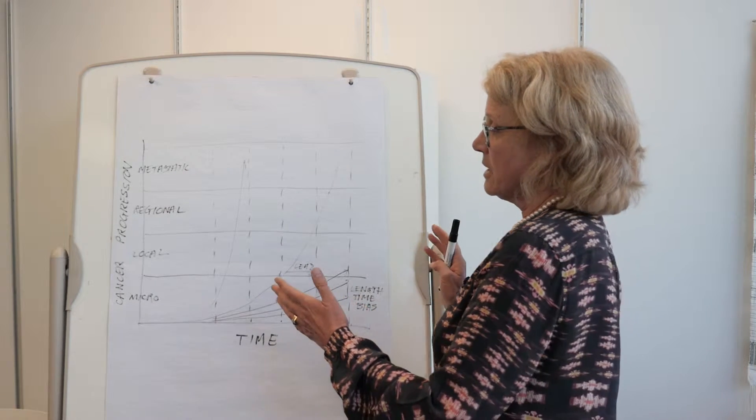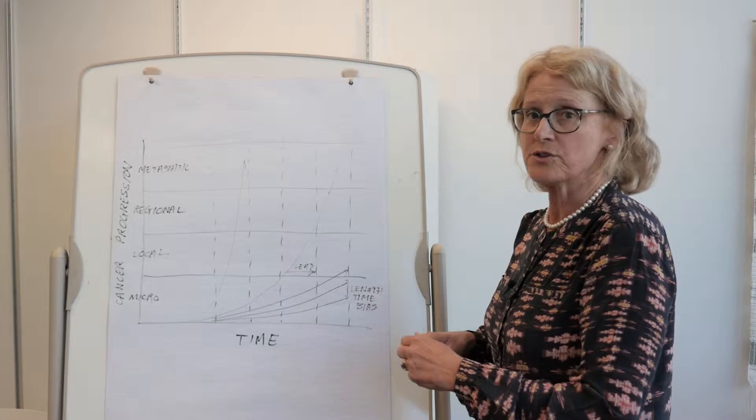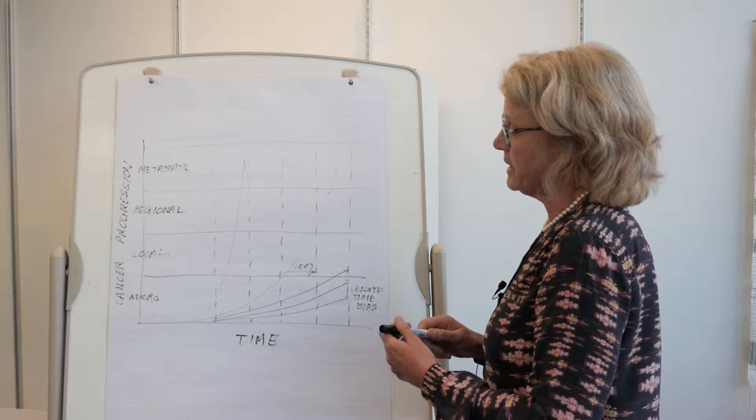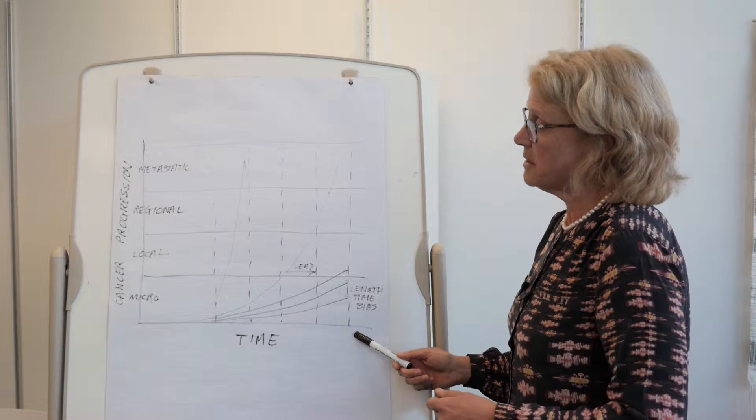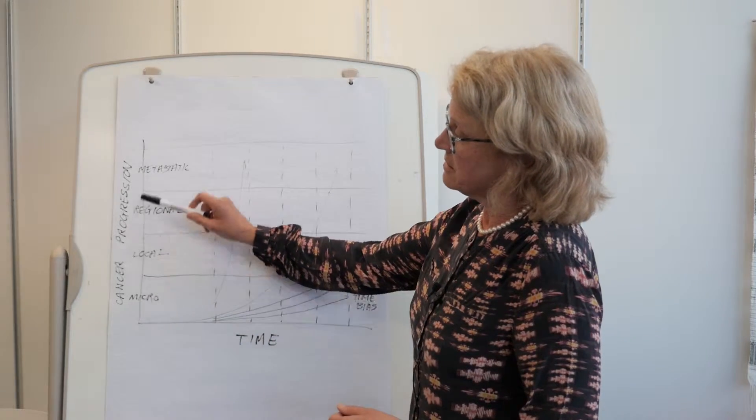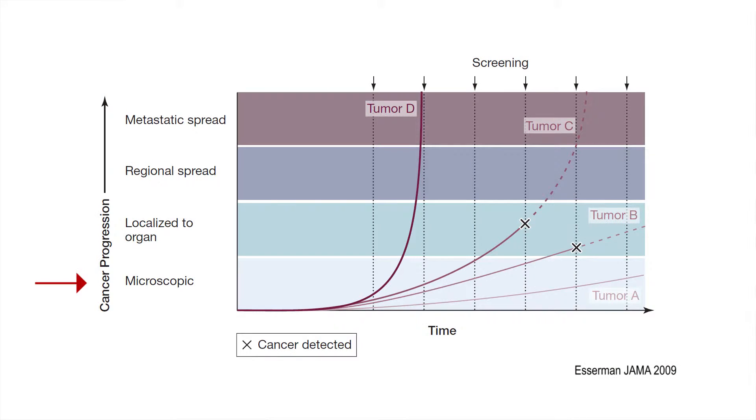A diagram like this is very helpful to explain to students what the consequences of screening can be. On the horizontal axis here we have time, and on the vertical axis I've represented cancer progression. Here we have microscopic level of cancer in a tissue, then it may progress from being microscopic to being localized,